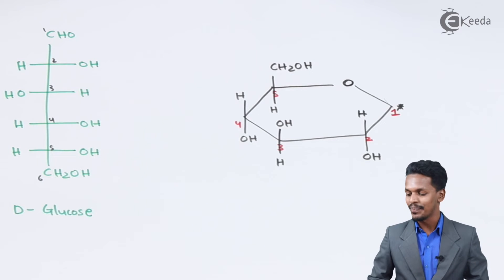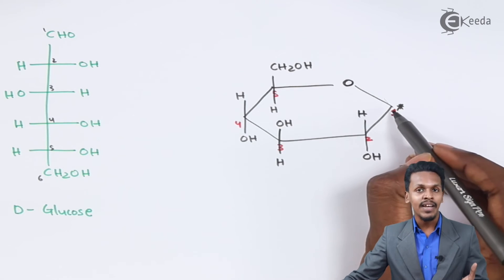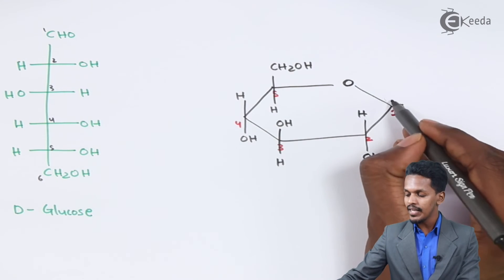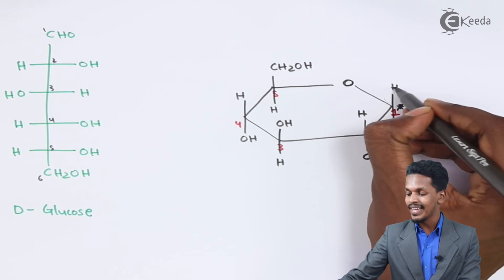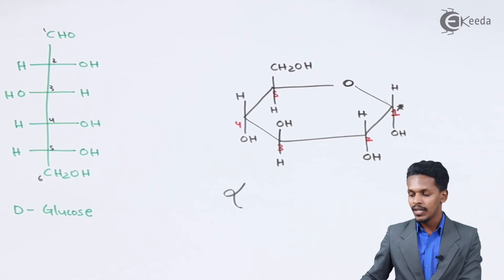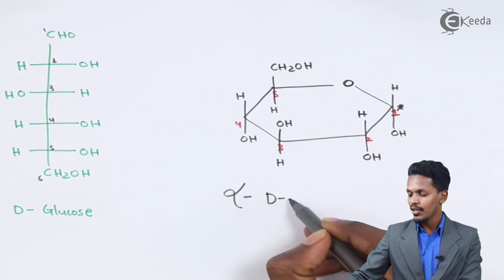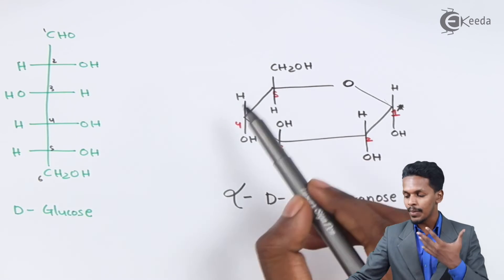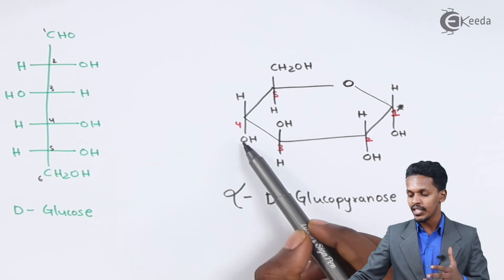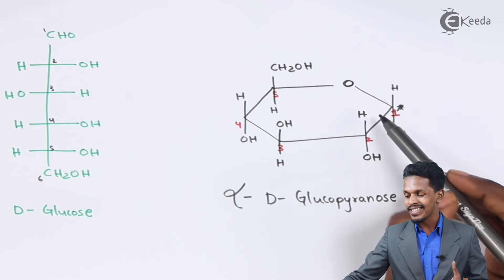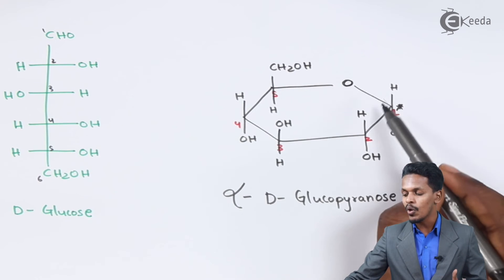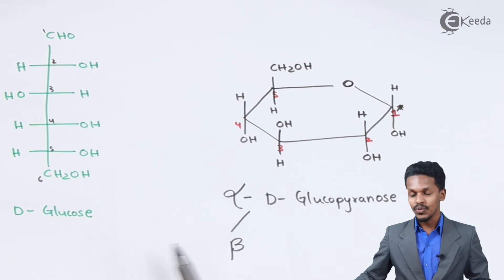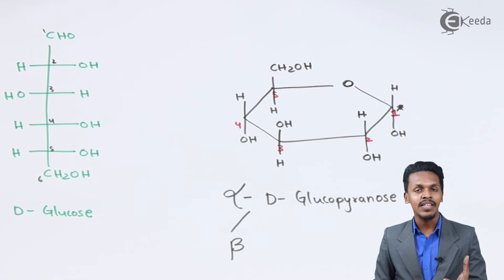Carbon number 1 is the anomeric carbon atom and decides whether the structure is the alpha or beta form. If the OH is downward and H is upward at C1, it is called alpha-D-glucopyranose. If the OH is upward and H is downward at C1, it is called beta-D-glucopyranose.